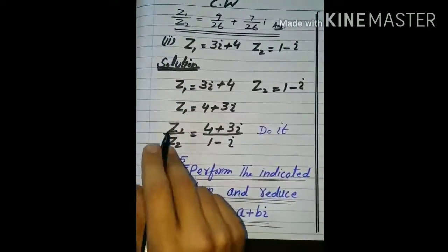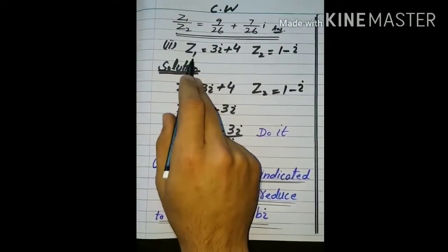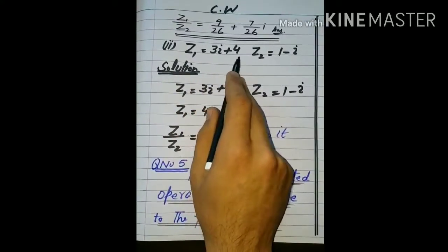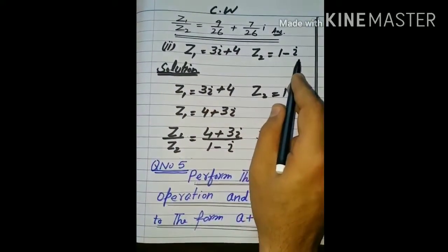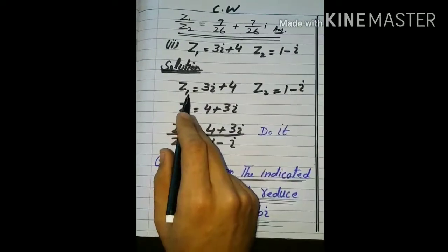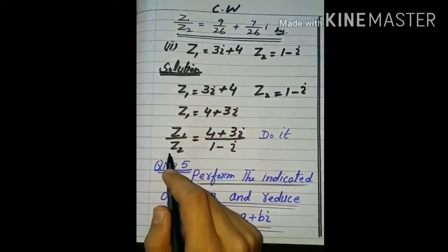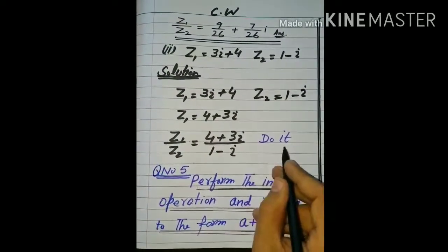Next question: Z1 equal to 3 plus 4 iota اور Z2 is equal to 1 minus iota۔ ان دونوں کو Z1 divided by Z2 کرنا ہے — آپ لوگوں نے خود کرنا ہے، یہ homework ہو گئی۔